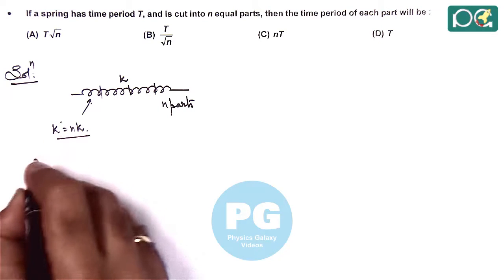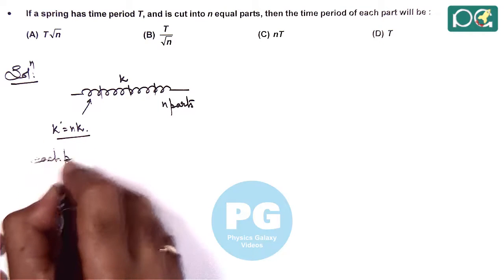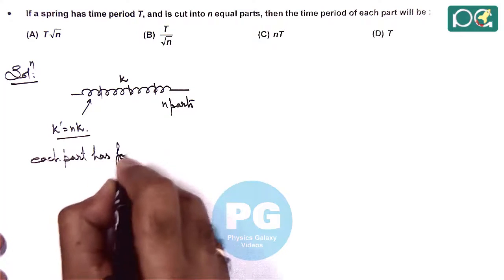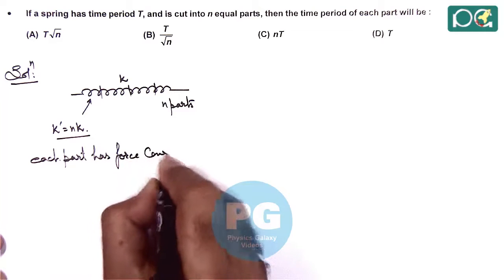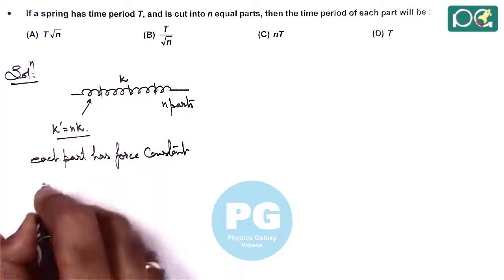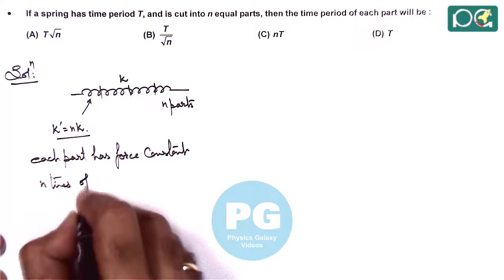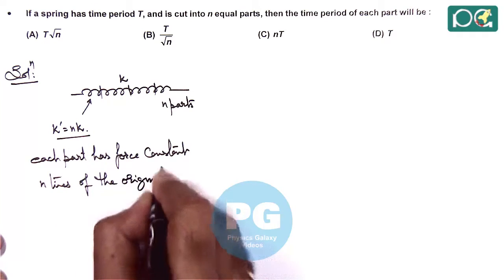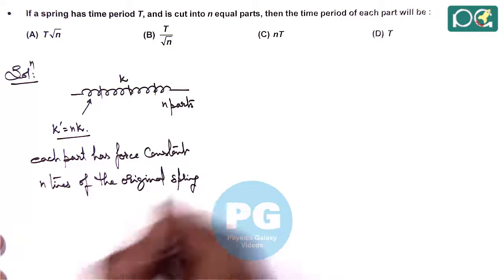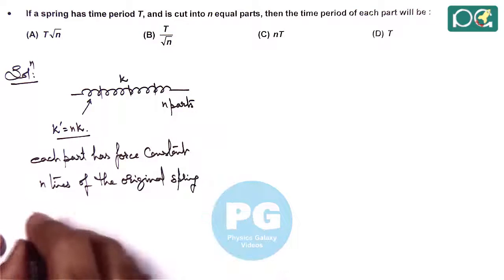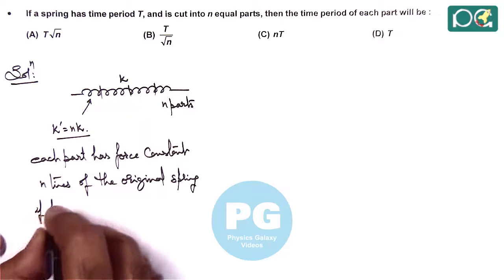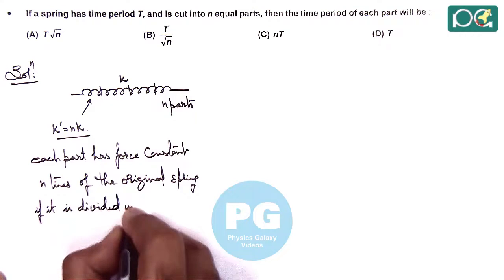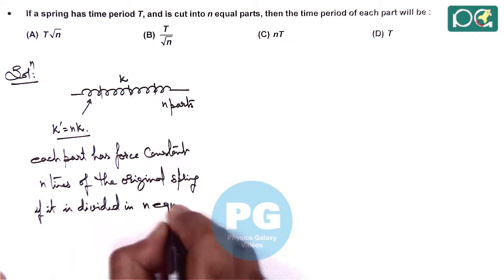So we can write that each part has force constant n times the original spring if it is divided in n equal parts.